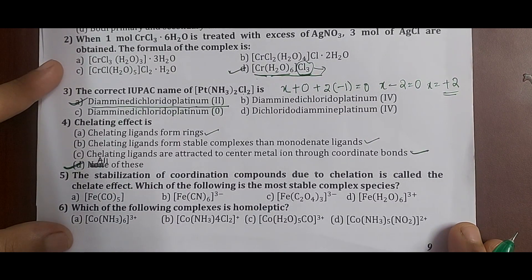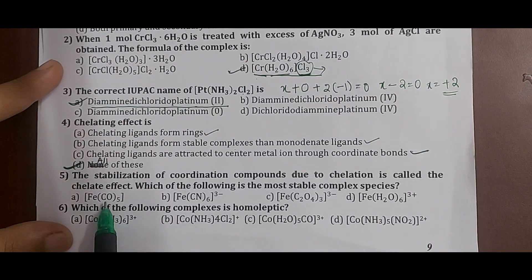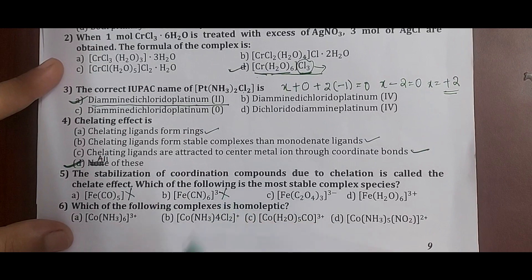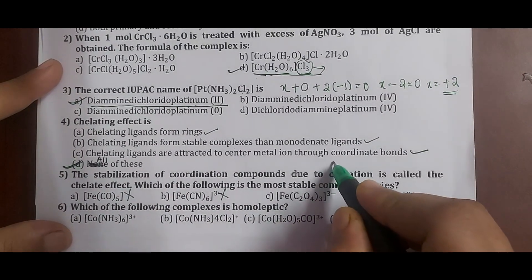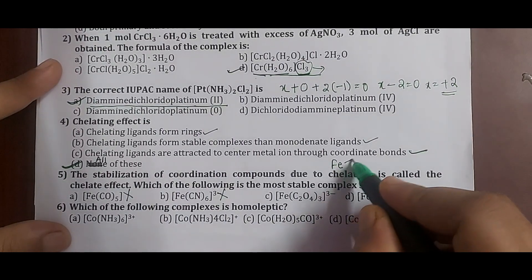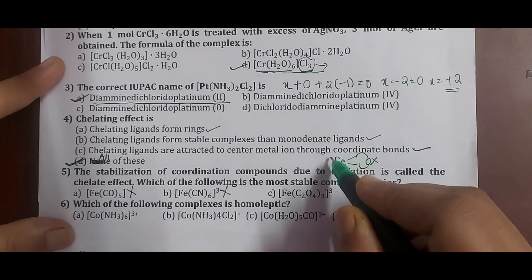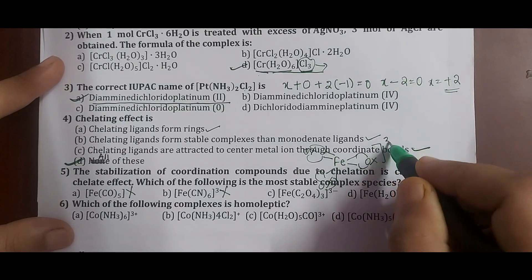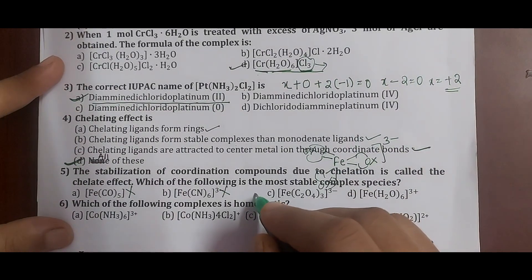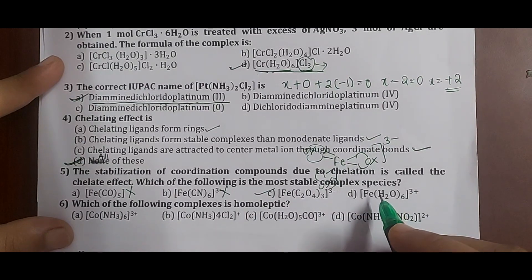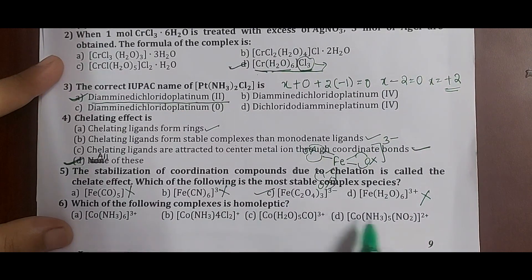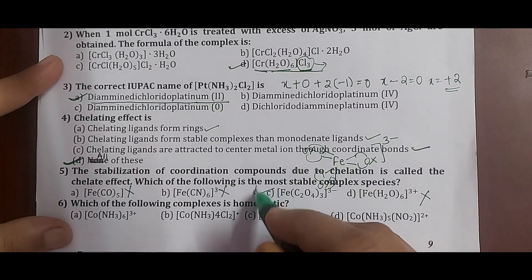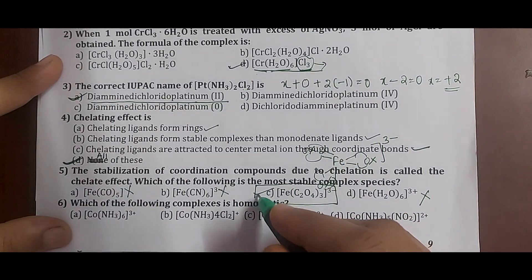Question 5: the stabilization of coordination compounds due to chelation is called the chelate effect. Which is the most stable complex? CO is monodentate — cannot form a ring. CN⁻ is monodentate — cannot form a ring. Oxalato is bidentate — it can form a ring-like structure with Fe, bonding on two sides. H2O is also monodentate. Therefore, the most stable complex is option C (Fe with oxalato), which shows chelation.